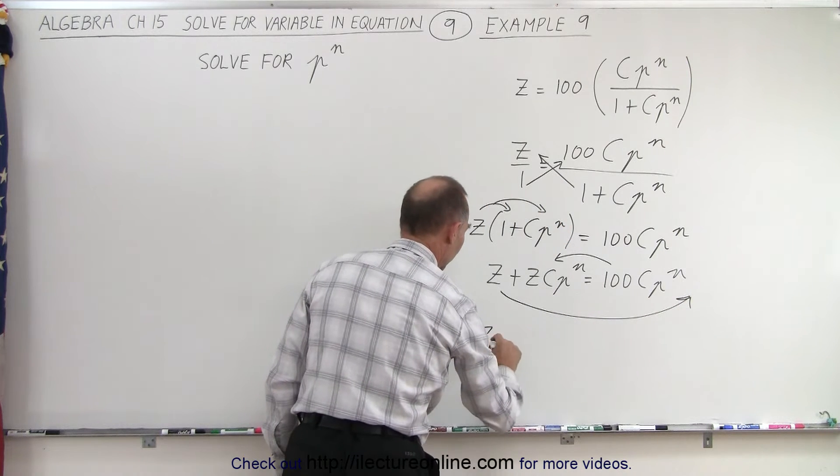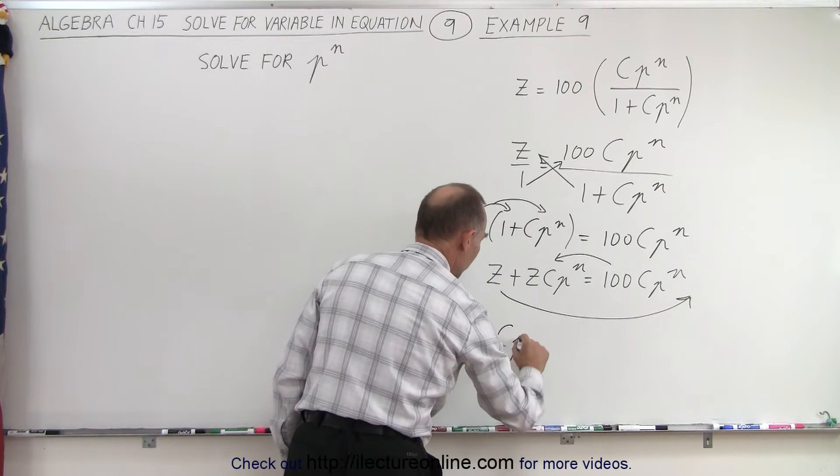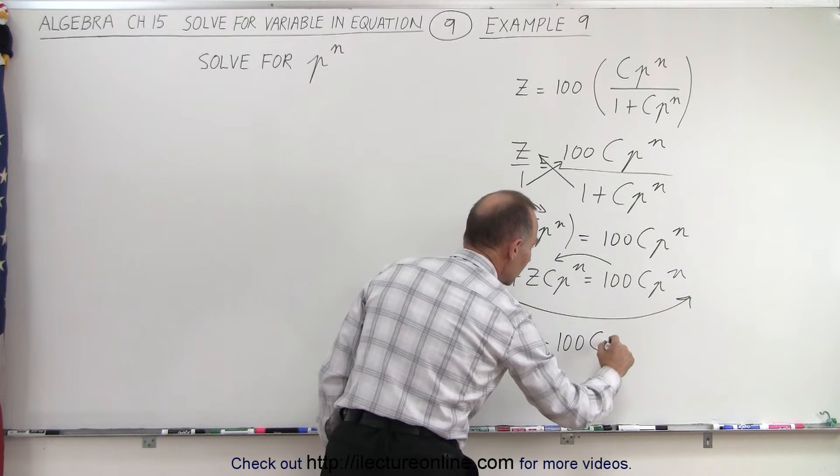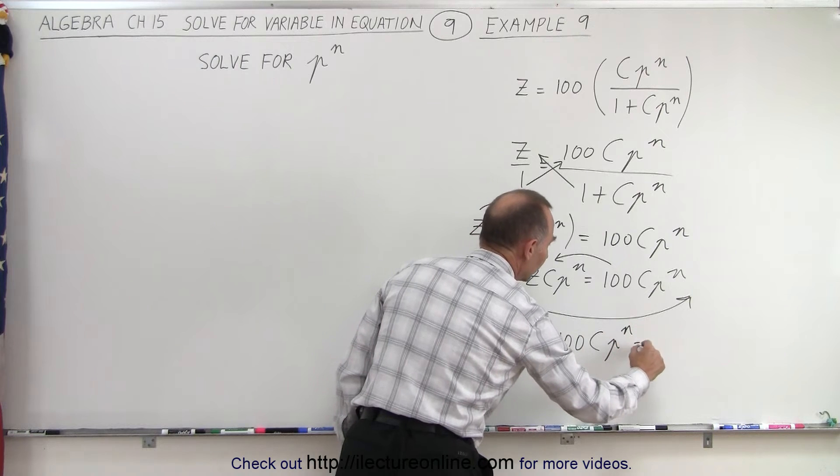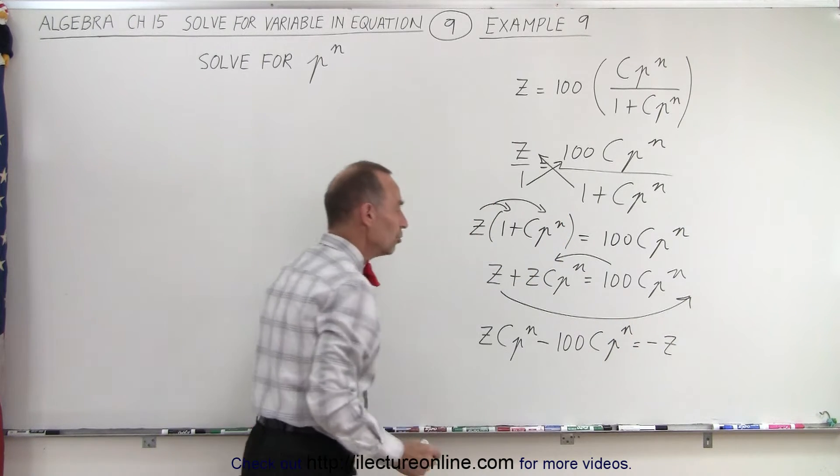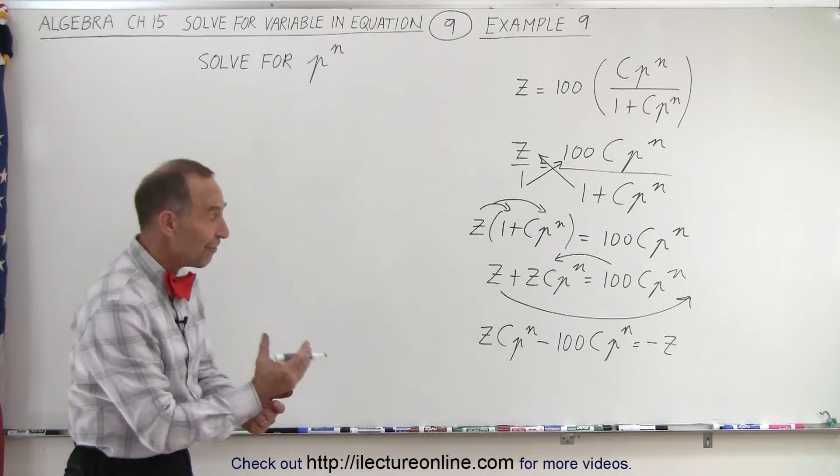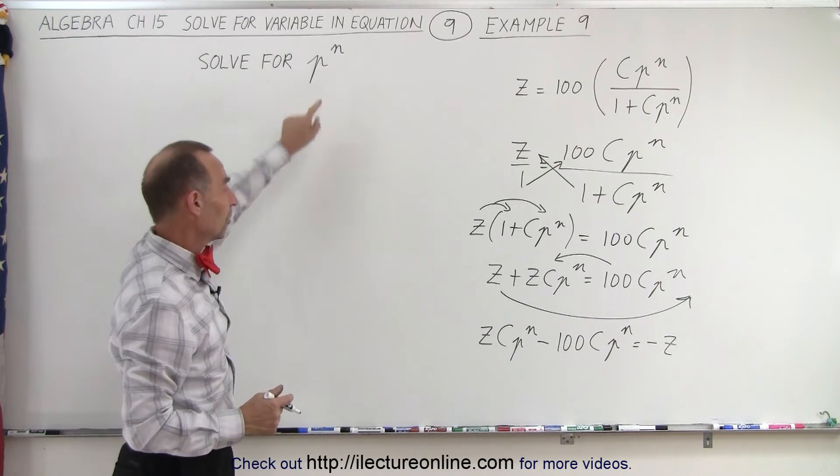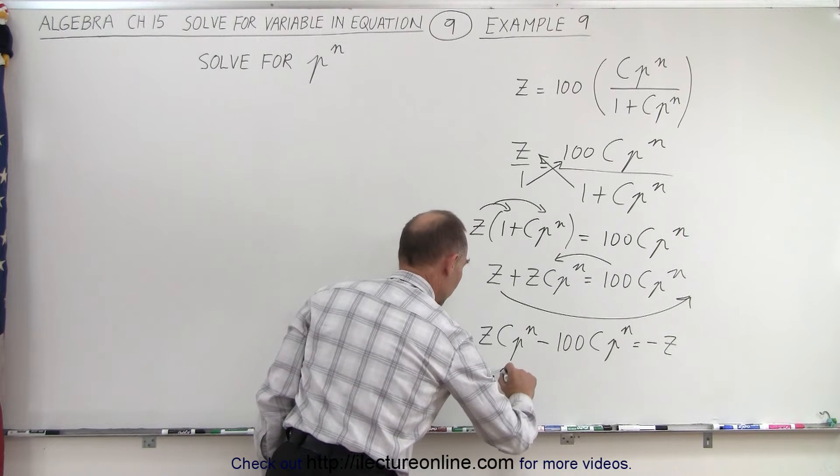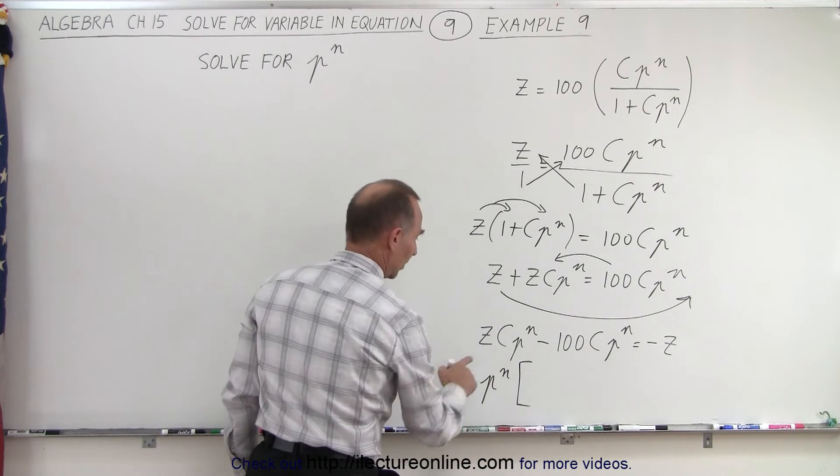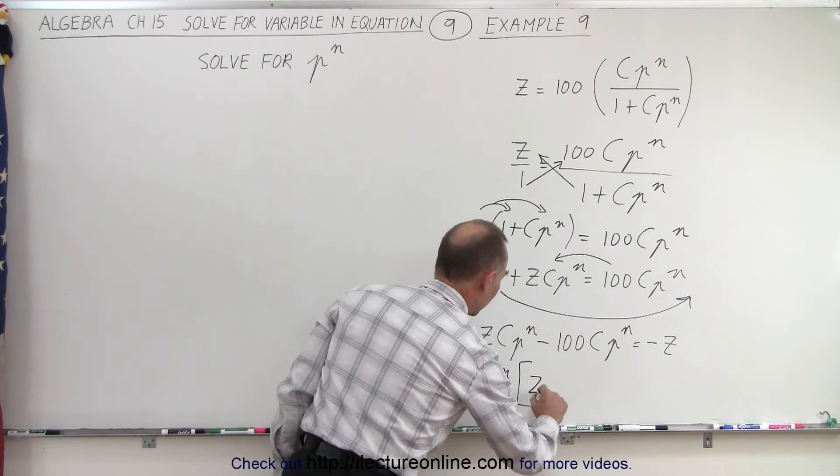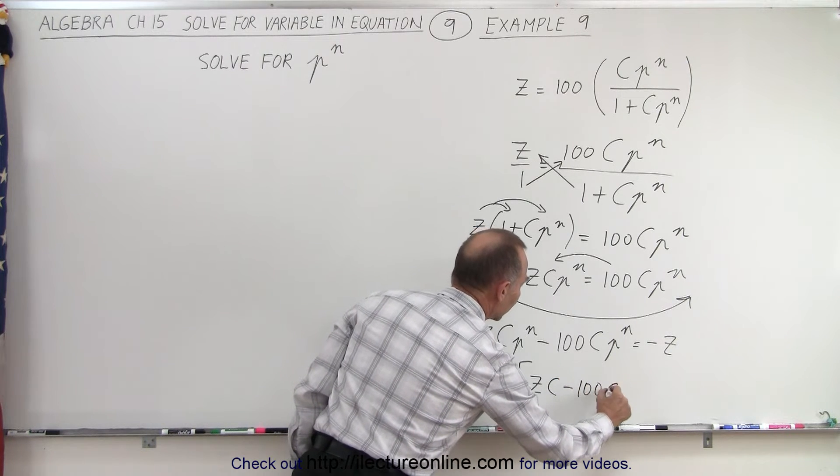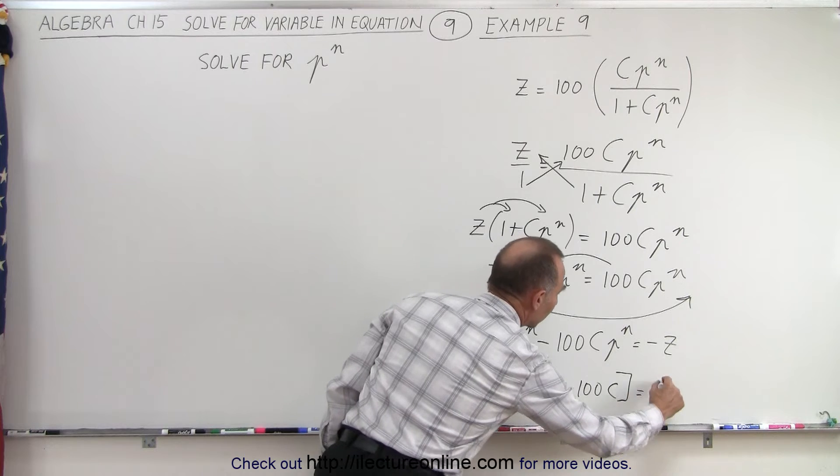And so we end up with zcp to the n minus 100cp to the n is equal to negative z. And notice on the left side we can now factor out the common factor p to the n, which is what we're looking for. So we have p to the n times, on the left side we have z times c minus 100 times c is equal to negative z.